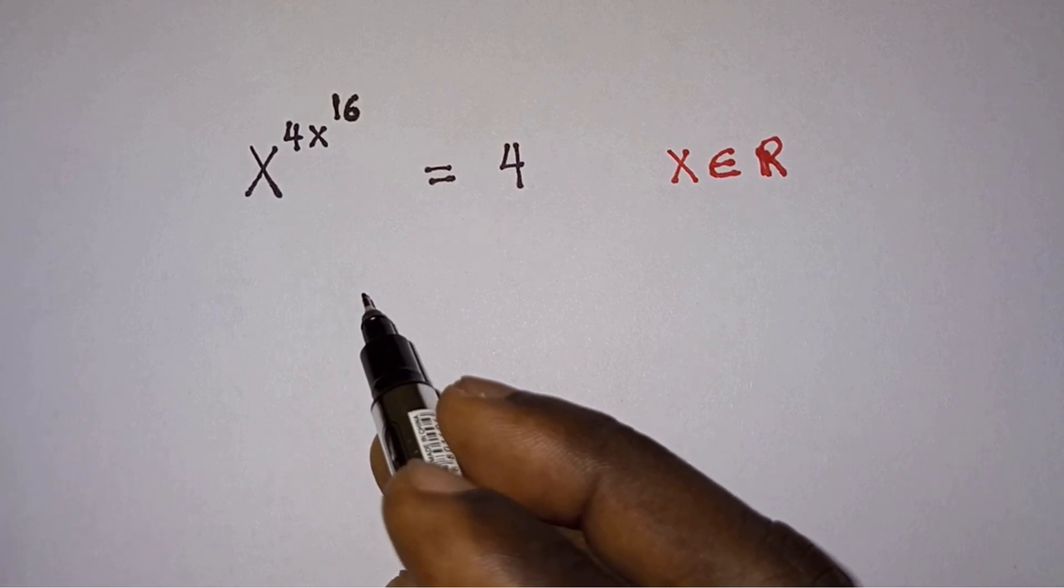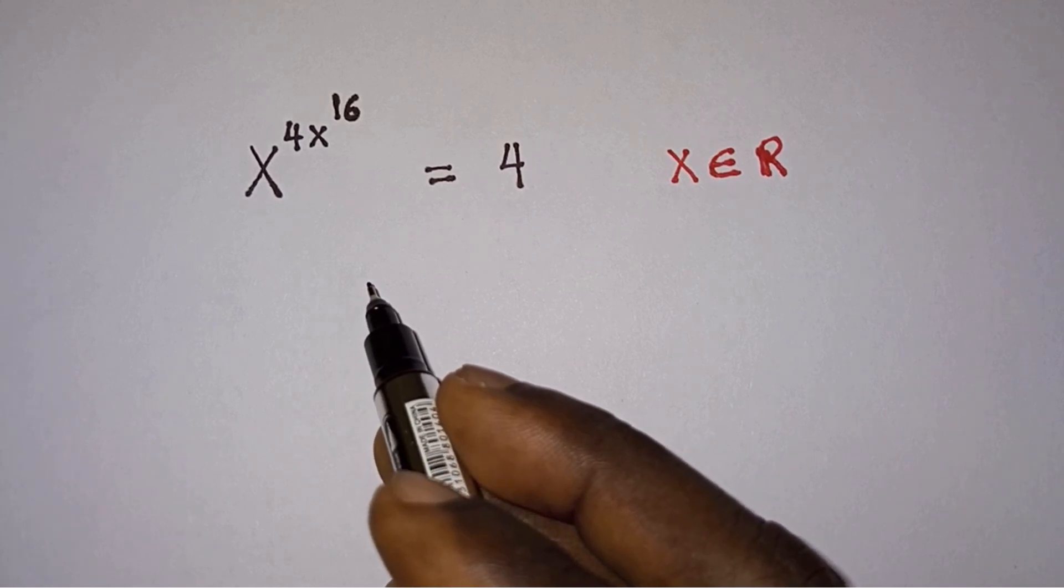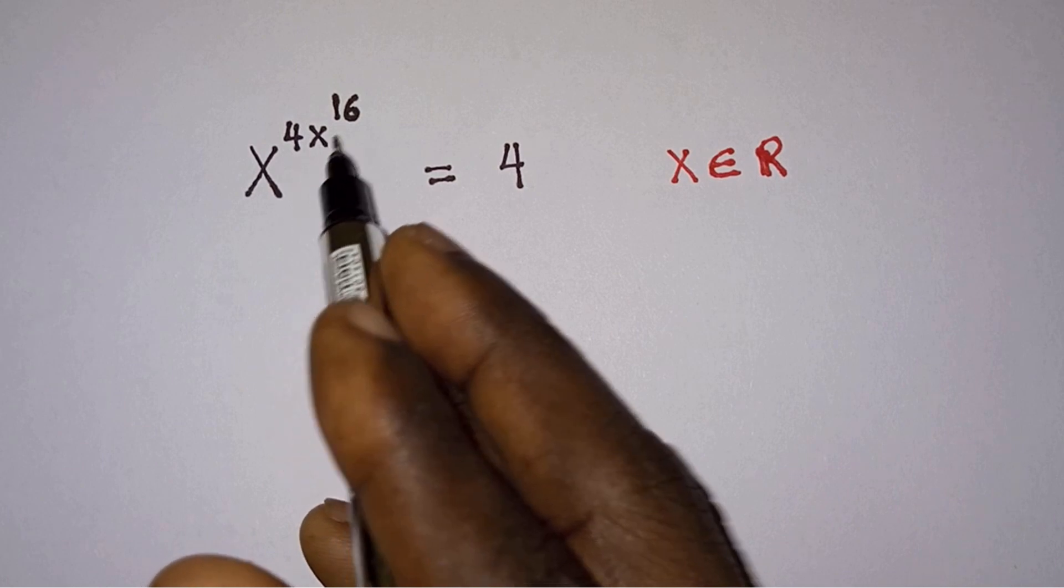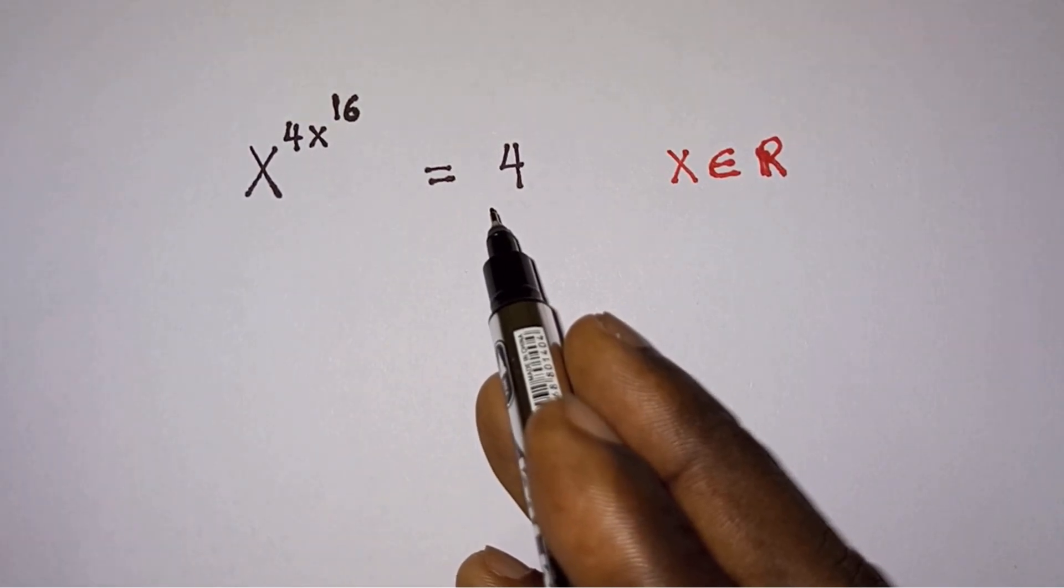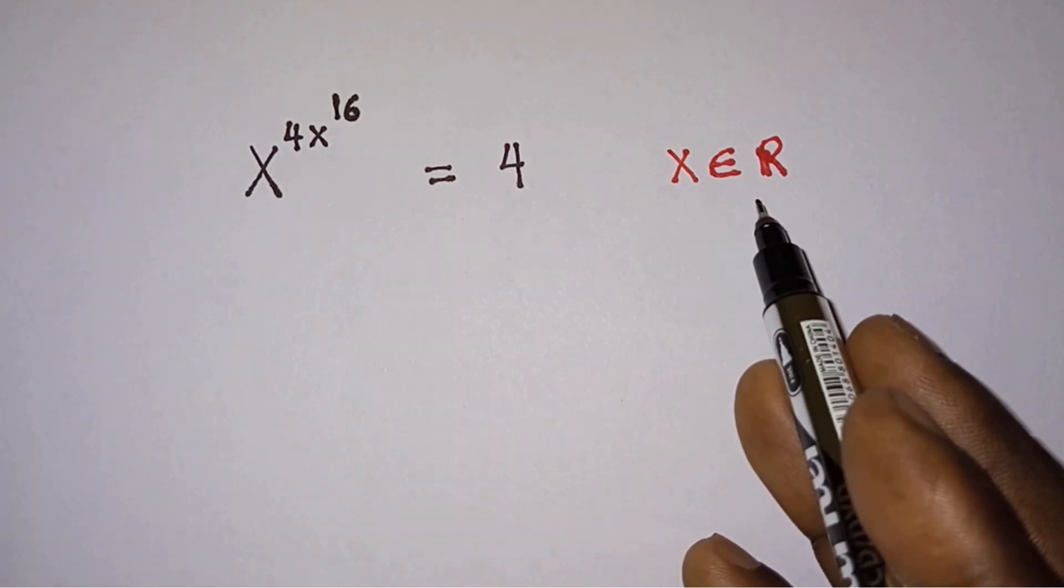Hello everyone, in this video we are given this interesting exponential equation: x to the power 4x to the power 16 is equal to 4, and we are to find the value of x where x belongs to real numbers.